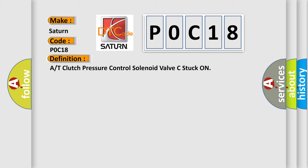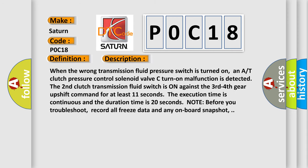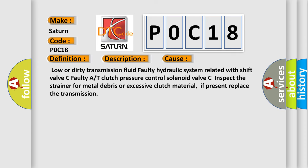The basic definition is: A/T clutch pressure control solenoid valve C stuck on. When the wrong transmission fluid pressure switch is turned on and A/T clutch pressure control solenoid valve C turn-on malfunction is detected, the second clutch transmission fluid switch is on against the third/fourth gear upshift command for at least 11 seconds. The execution time is continuous and the duration time is 20 seconds. Note: before you troubleshoot, record all freeze data and any onboard snapshot. This diagnostic error occurs most often due to low or dirty transmission fluid, a faulty hydraulic system related to shift valve C, or a faulty A/T clutch pressure control solenoid valve C. Inspect the strainer for metal debris or excessive clutch material; if present, replace the transmission.